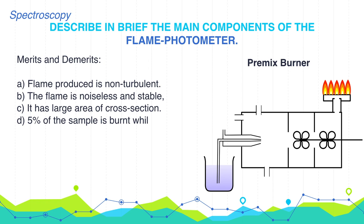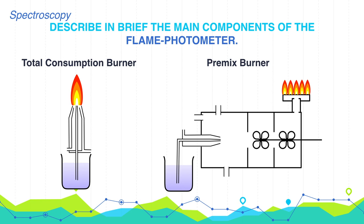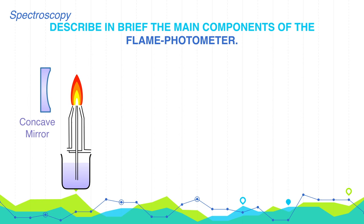Let's discuss other components of the flame photometer. These are concave mirrors. All the radiations which are emitted by the excited atoms are collected by the concave mirror and are passed to monochromators.